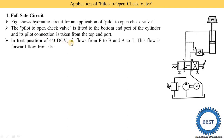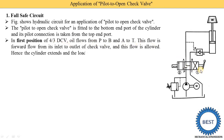In the first position of the 4/3 DCV, oil flows from P to B and A to T. The P port is connected to B — oil from the pump is supplied to port P, goes to port B, enters the pilot-to-open check valve, passes through, and is supplied into the cylinder. This oil applies force on the piston, and the piston starts to move upward, lifting the load. This is called extension of the cylinder. This flow is forward flow through the check valve and is allowed.